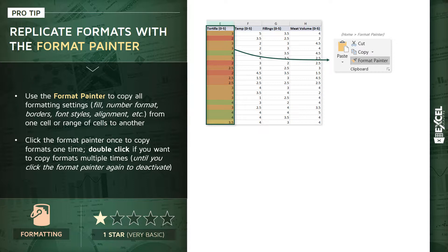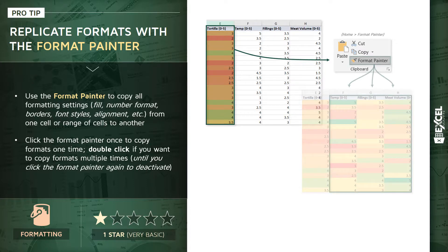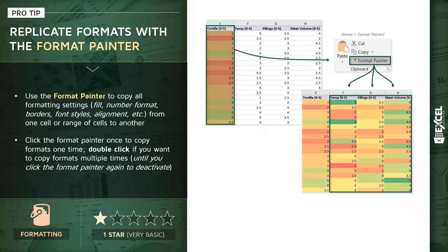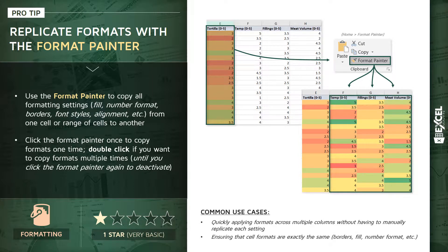This is a really helpful tool that lets us apply that color scale from column E to columns F, G, and H by simply clicking three times. Common use cases include quickly applying formats across multiple columns without manually adjusting formatting settings yourself, and ensuring that cell formats are exactly the same — including all different criteria like borders, fills, number formats, and so on.